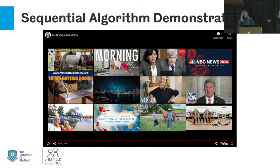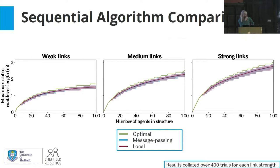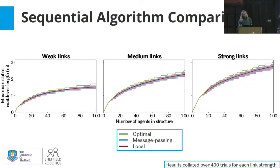Comparing results: we have the local variant and the message-passing variant, and we also computed optimal structures using a brute-force approach — for 40 agents, what's the longest possible structure? Both algorithm variants perform very close to each other, and they're pretty close to optimal performance. Using less information in the local variant doesn't really impact performance at all, which is quite promising.